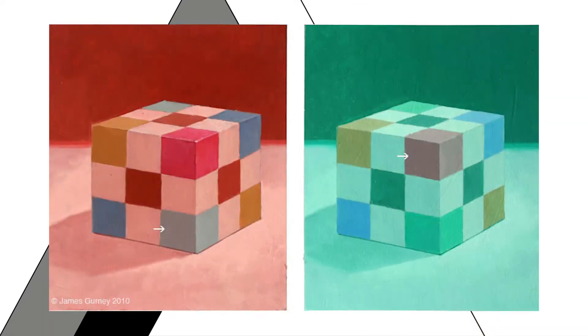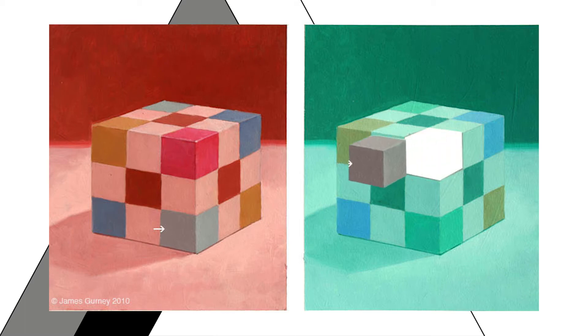To drive this point home, look at this drawing. The color of the two patches indicated with arrows are identical in the image, but your conscious experience of them is radically different. But I can prove to you that they're identical in the image by cutting one side out and placing the two colors side by side. Now, you can see that they are identical. But if I move the patch back to its original position, you can no longer see them as identical. Now they look as different in color as they originally did.